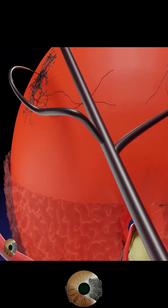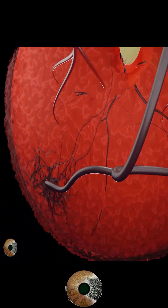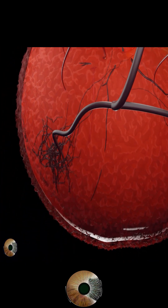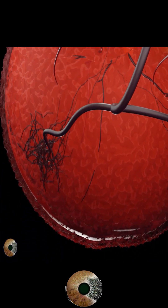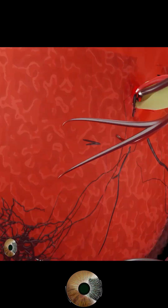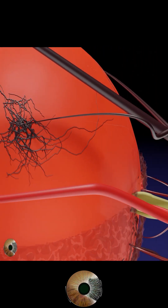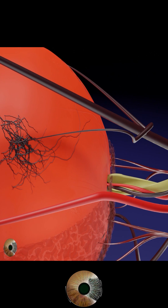Each vortex vein drains a quadrant of the choroid, ciliary body, and peripheral retina. They exit the eye by piercing the sclera obliquely, posterior to the equator.